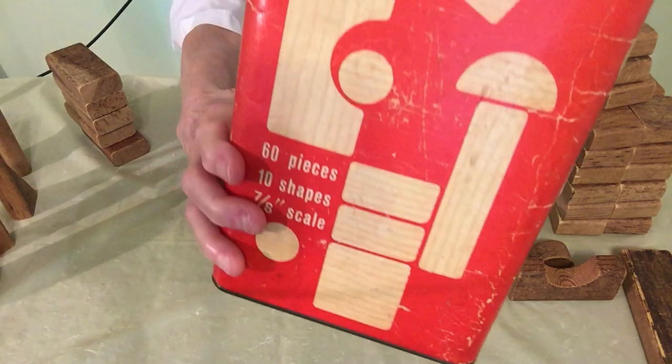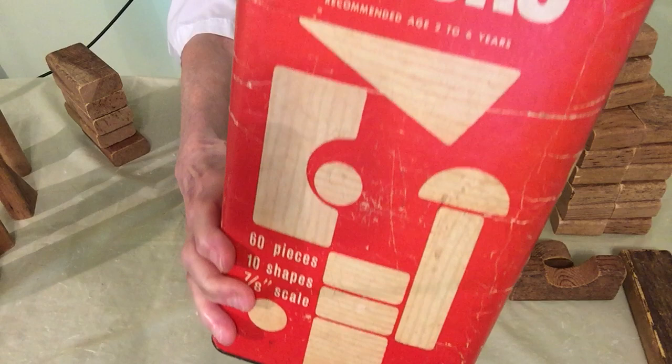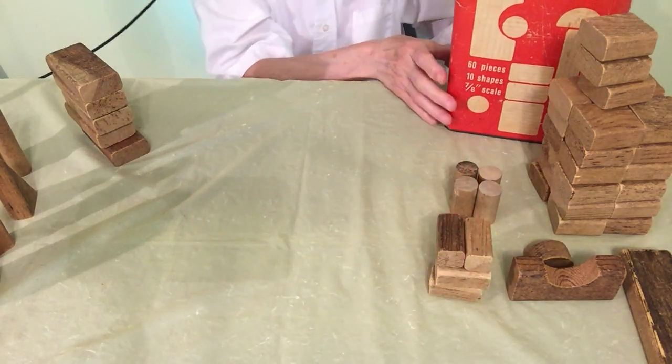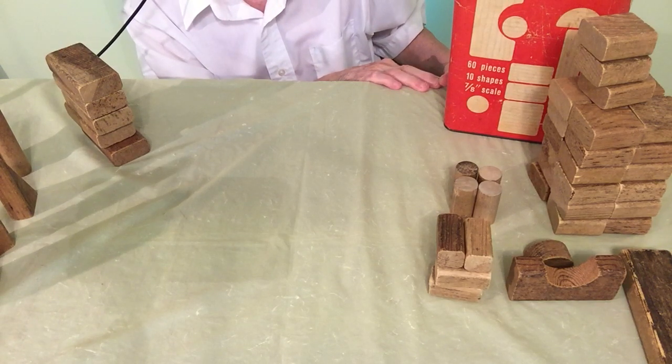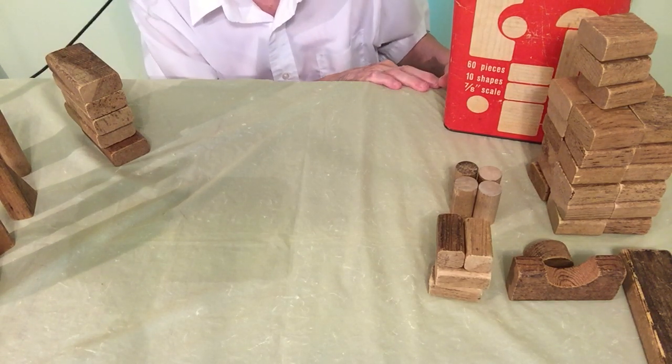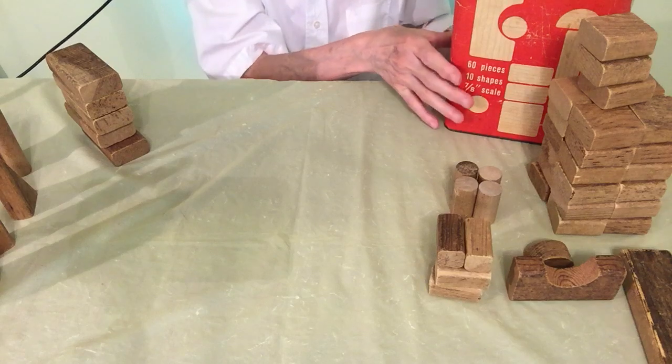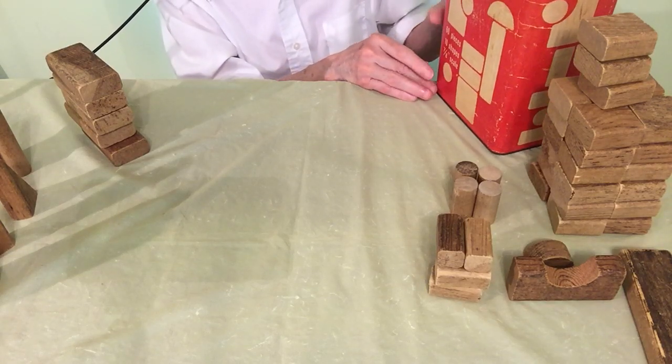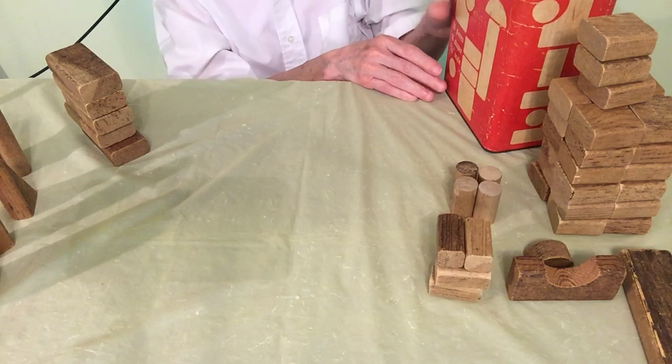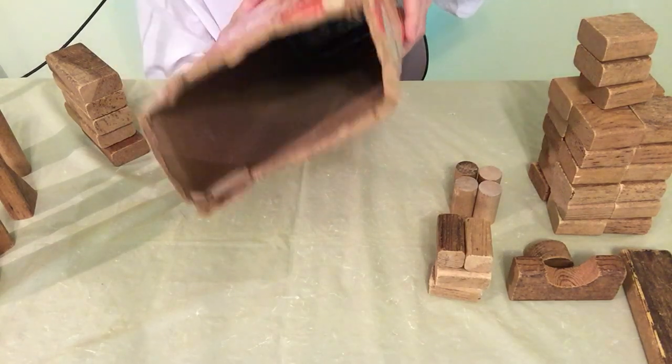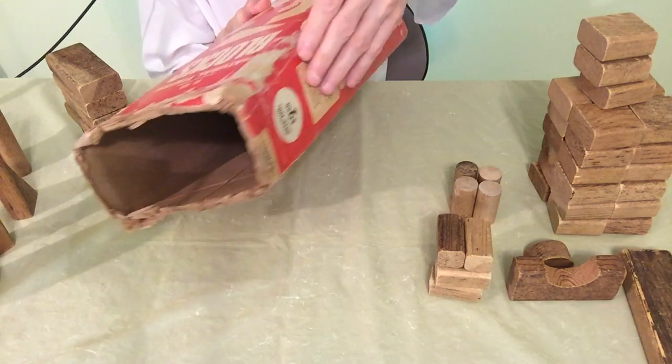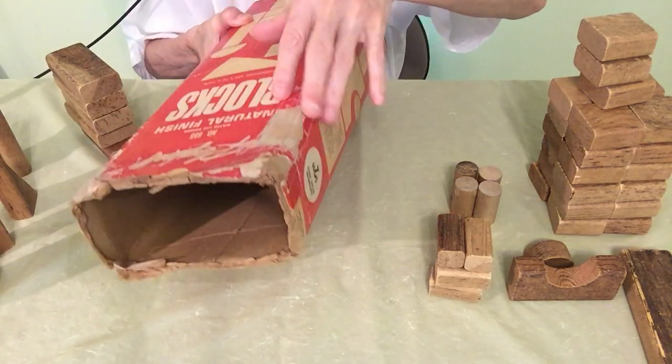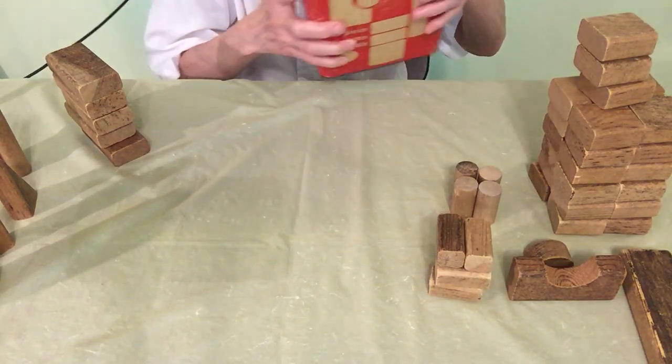But these are the different shapes here. So these blocks here are about 64, 65 years old. The container's not in bad shape considering I let my little daughter play with them and she kind of messed them up just a little. You can see I taped it together here because it was kind of messed up.